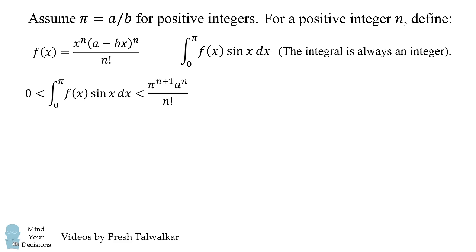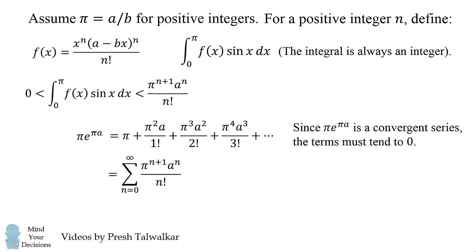We now need to establish that the right hand side inequality goes to 0 as n goes to infinity. So we'll consider pi times e^(pi*a). The Taylor series of this will be the following expansion, where each term is pi^(n+1) multiplied by a^n all over n factorial. Since pi times e^(pi*a) is a convergent series, the terms must tend towards 0. This implies the right hand side will go to 0 as n goes to infinity.